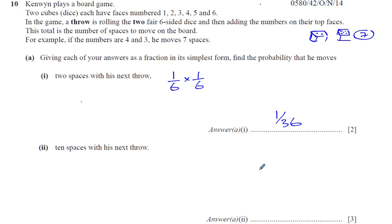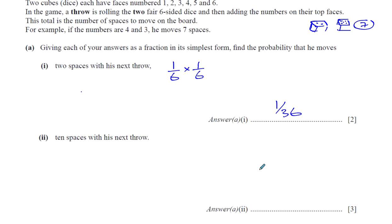Then it says ten spaces with his next throw. Now we're going to think of all the ways of getting a total of ten when you have numbers from one to six. If you want to, you could make a table, instead of having to think about every single possibility. You could say, the first dice: one, two, three, four, five, six. Second dice: one, two, three, four, five, six. You can see, with two throws, there's 36 possibilities, so you know it's going to be over 36, maybe you have to simplify it.